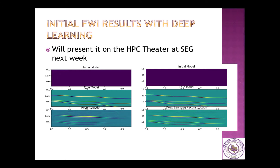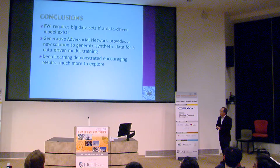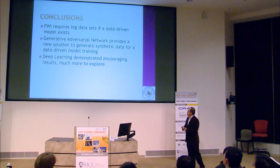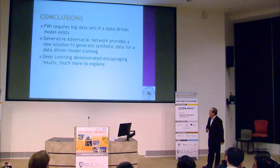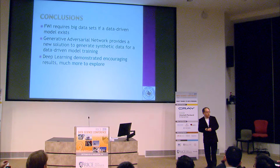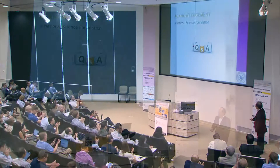I will present more about this work next week at SEG in the HPC theater if you are interested. The conclusion is: we are using Generative Adversarial Networks, which provide a solution to generate a lot of synthetic data. We think this could be a viable approach for our deep learning and data science research, since data is the number one thing we need. We'd like to see if this can lead to better performance in FWI processing.